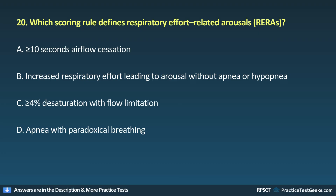Question 20: Which scoring rule defines respiratory effort-related arousals (RERAs)? A. More than 10 seconds airflow cessation, B. Increased respiratory effort leading to arousal without apnea or hypopnea, C. 4% desaturation with flow limitation, D. Apnea with paradoxical breathing.